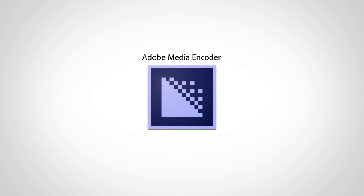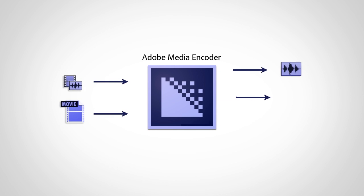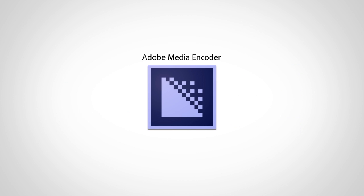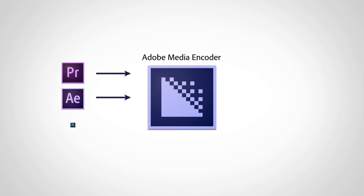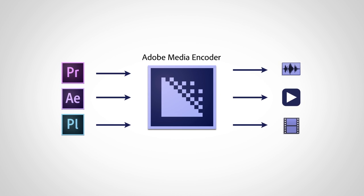Adobe Media Encoder is a transcoding and rendering application that lets you encode audio and video in a variety of formats. It can be used as a standalone application, but it also functions as a companion to Adobe Premiere Pro, Adobe After Effects and Adobe Prelude.